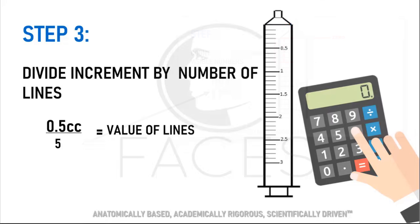When we do the division, you'll see that the quotient we solved for is 0.1 cc's. Each line represents 0.1 cc's of medication.